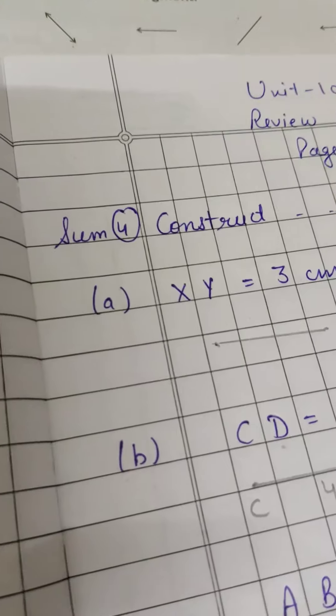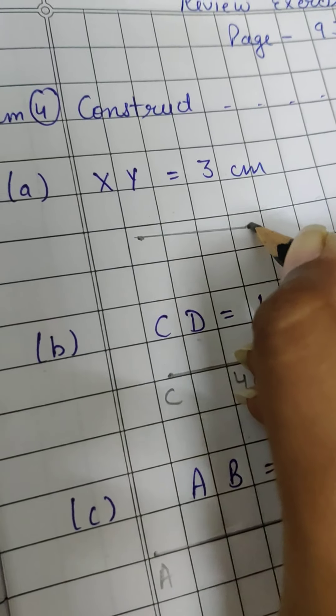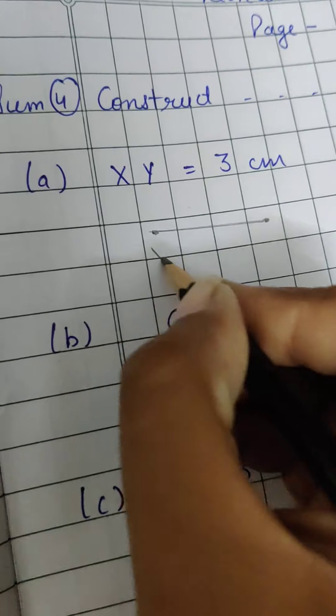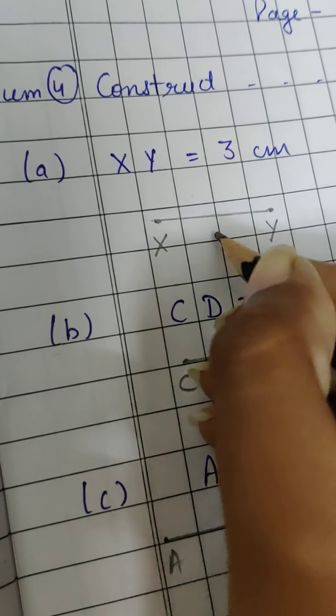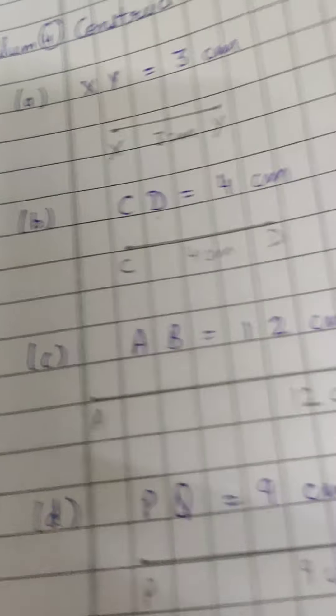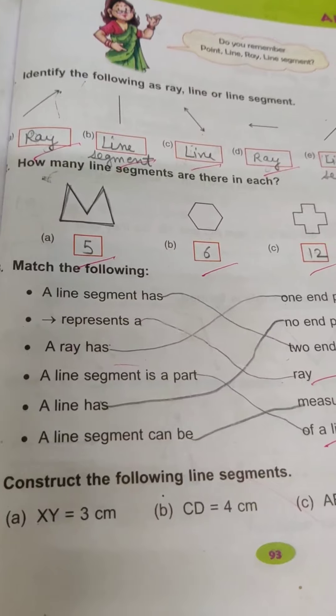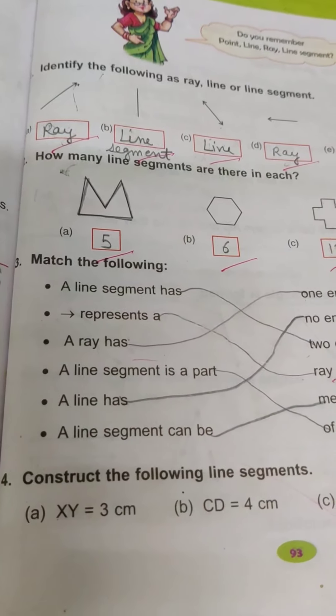So this is X and this is Y. This is 3 cm. Similarly, you have to do the other parts of this. So this is your homework that you have to do parts one, two, three in your book and four in your notebook. Thank you.